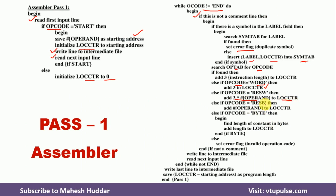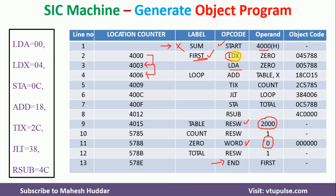If the directive is RESB (reserve bytes), the operand is already in bytes — convert to hexadecimal and add to the location counter to get the next location. If it is not RESB, then it must be BYTE: find the length of the constant, determine how many bytes are required, and add that number of bytes to the location counter. So while incrementing the location counter: if the opcode is in OPTAB, increment by 3; otherwise, check whether it is RESW, WORD, RESB, or BYTE and increment accordingly.